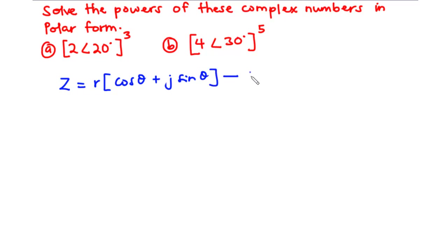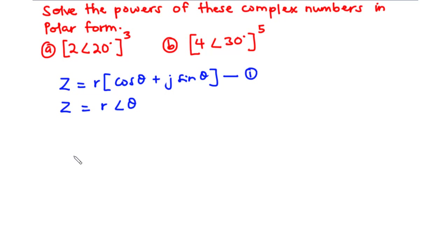Let's call this equation 1. We can further simplify this to have z equals r polar theta, where r is called the modulus and theta is the argument.